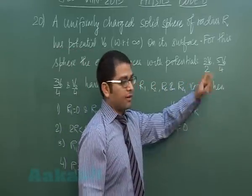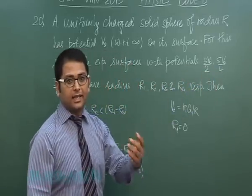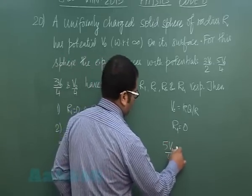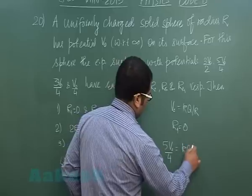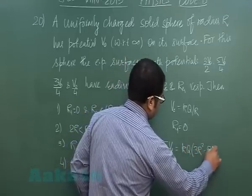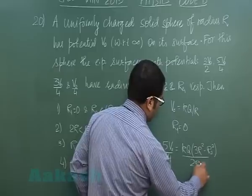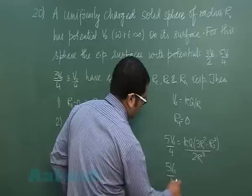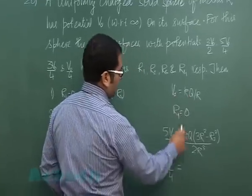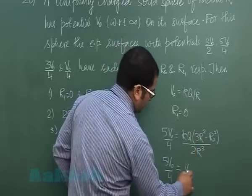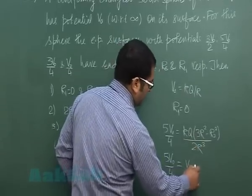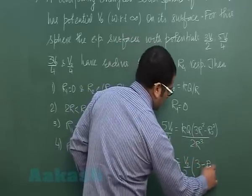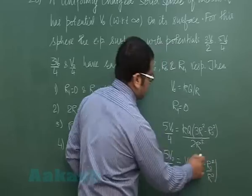5V naught by 4 is the potential greater than V naught, so clearly it is inside the sphere. So I'll have 5V naught by 4 is KQ times (3R square minus R2 square) by 2R cube. That's 5V naught by 4 is KQ, which can be written as V naught into R, so that will be V naught by 2.